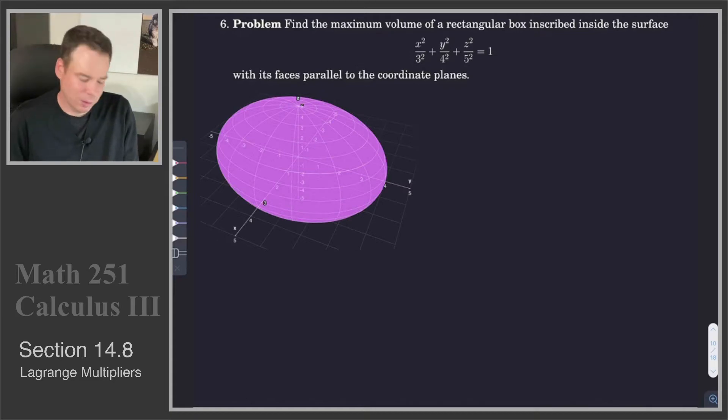Hi everyone. We're going to look at another example of a Lagrange multipliers problem. We want to find the maximum volume of a rectangular box that's inscribed inside this ellipsoid and its sides are going to be parallel to the coordinate planes.